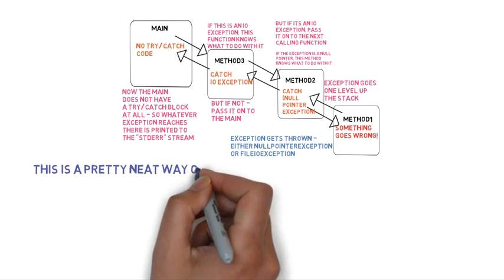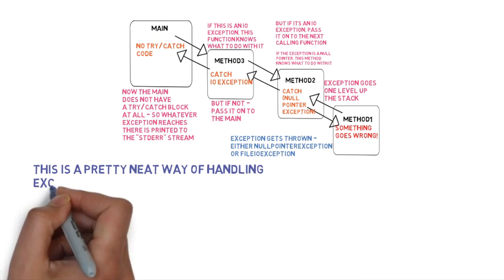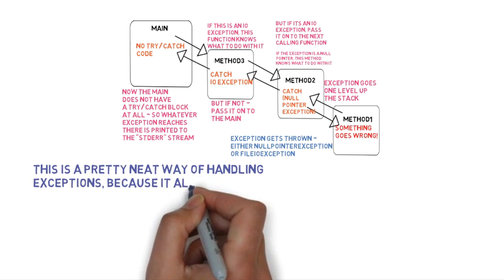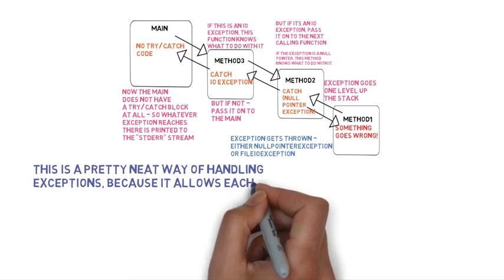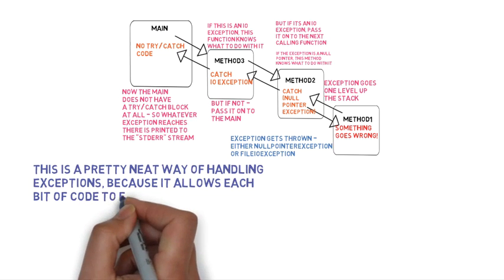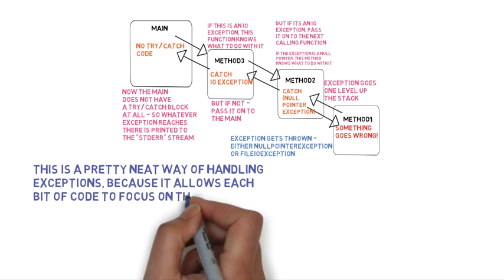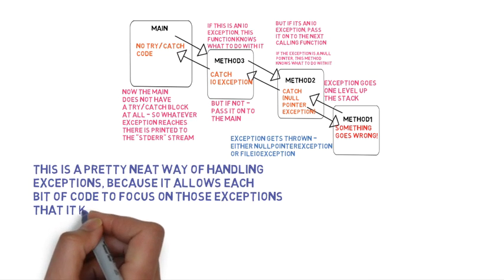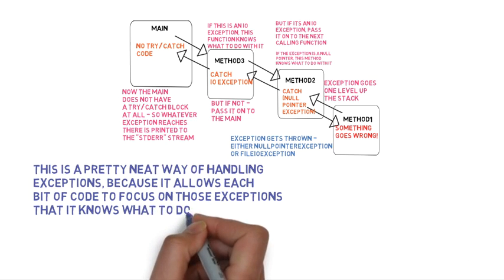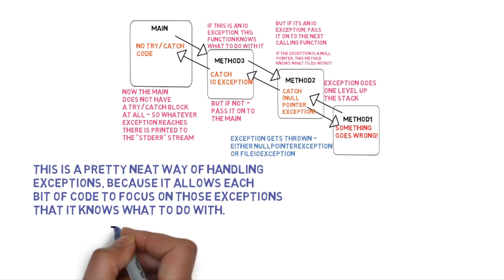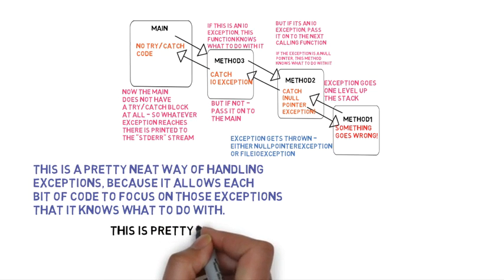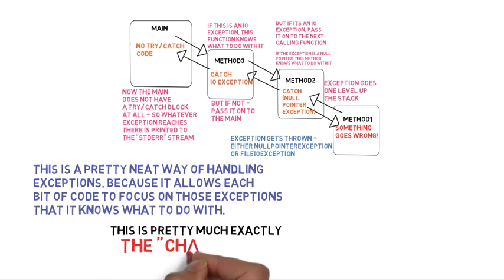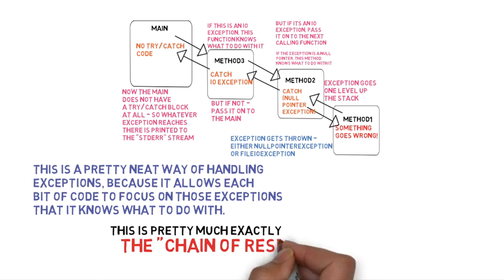What we've described so far is a really neat way of handling exceptions, because it allows each bit of code to focus on those exceptions that it knows how to deal with. Each bit of code takes responsibility for the exceptions it knows how to handle, and the rest throws up its hands and passes the responsibility on to someone else. Since we've been using the term 'responsibility,' this is pretty much exactly the Chain of Responsibility design pattern.